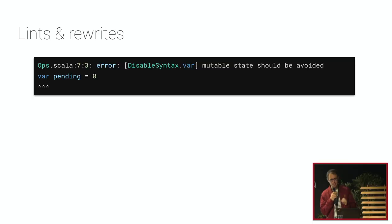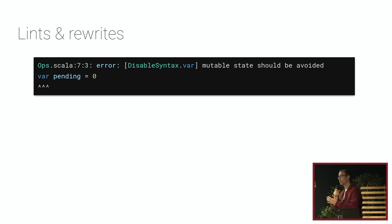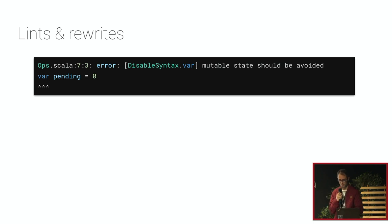We'll look more into how you can use ScalaFix for everyday tasks around migration or writing code. ScalaFix is a linter and a rewriting tool. The first use case is linting — for example, there's a built-in rule that prevents usage of `var` in your code, and it will fail the build on CI if a `var` is used.